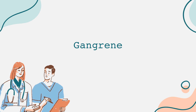Gangrene is a serious medical condition that occurs when body tissue dies due to lack of blood flow or bacterial infection. Today, we're going to explore what gangrene is, the types it includes, symptoms to look out for, causes, risk factors, and treatment options available. Understanding this condition is essential for both prevention and timely intervention.